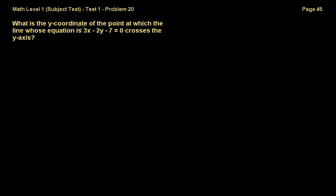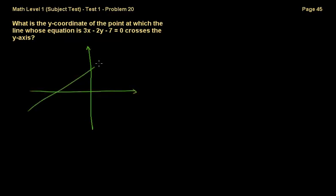On problem 20, the question is: what is the y-coordinate of the point at which the line whose equation is 3x minus 2y minus 7 equals 0 crosses the y-axis? When a line crosses the y-axis, the x value of that point is always 0, because it's on the y-axis. So to find this point, you put x equal to 0.